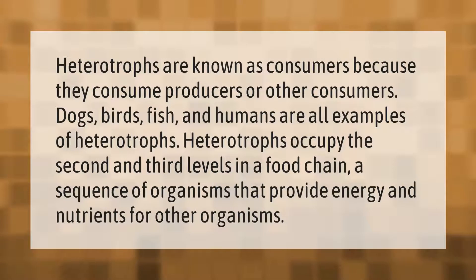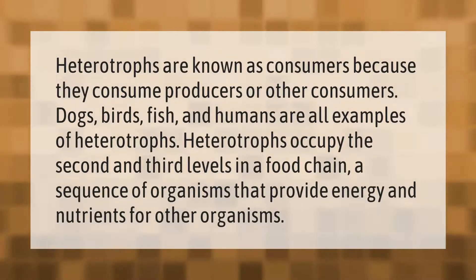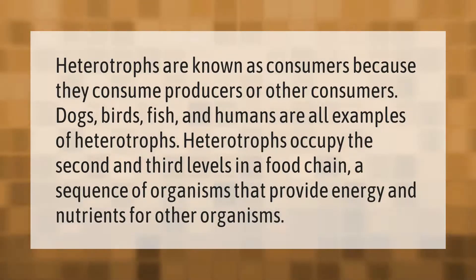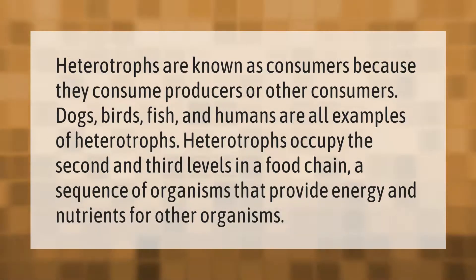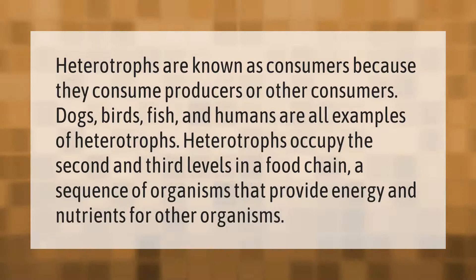Heterotrophs are known as consumers because they consume producers or other consumers. Dogs, birds, fish, and humans are all examples of heterotrophs. Heterotrophs occupy the second and third levels in a food chain, a sequence of organisms that provide energy and nutrients for other organisms.